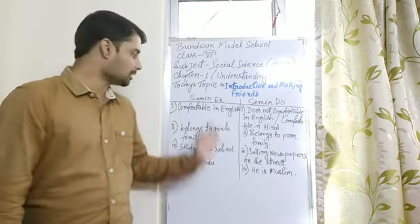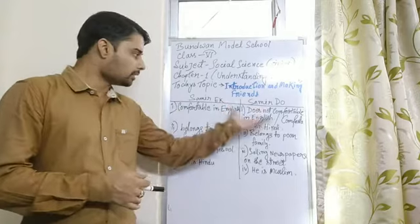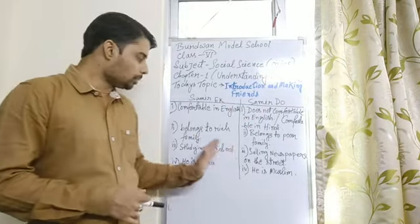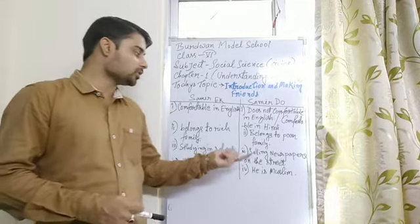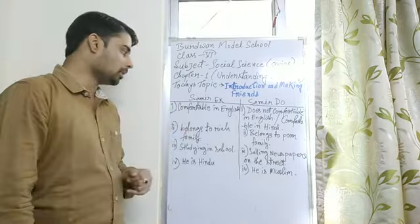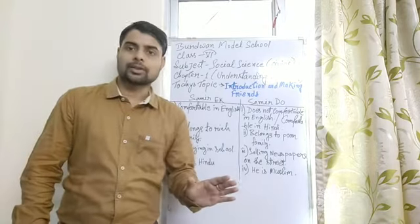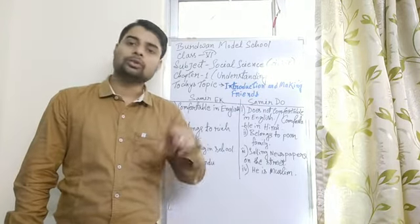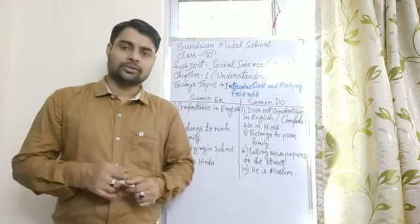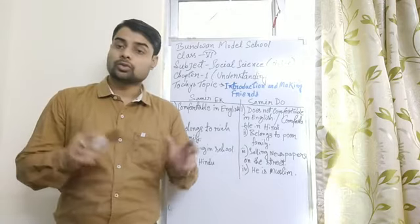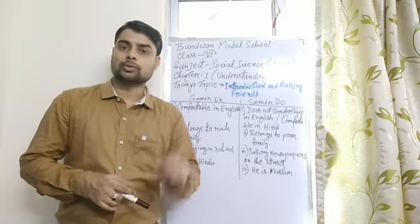Other differences include their places of living — Samir Ek lived in a city like Delhi, and Samir Do lived in Meerut. So their places, occupations, family backgrounds, financial conditions, languages, and religion are all different. But both are citizens of India, living in India with their different backgrounds. This is diversity.